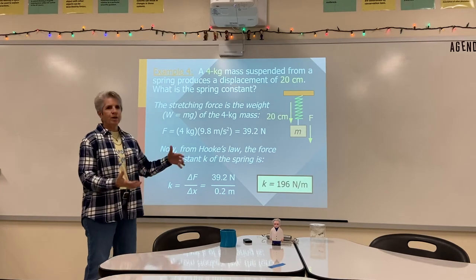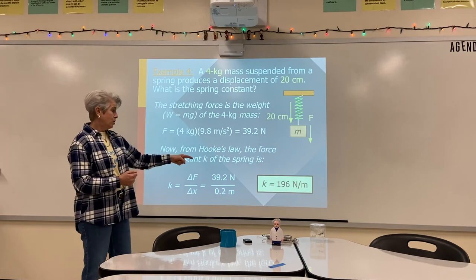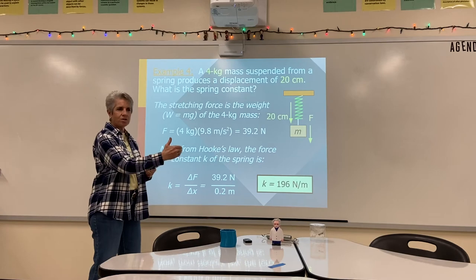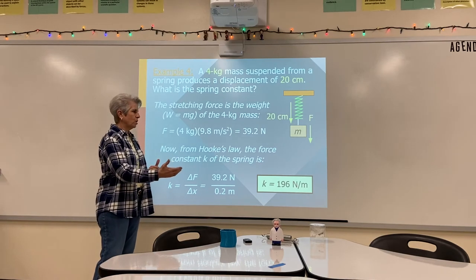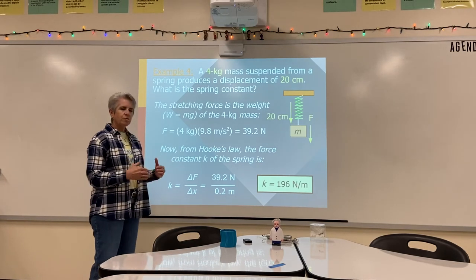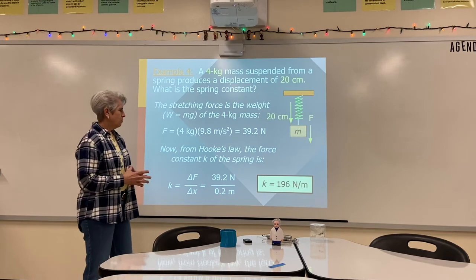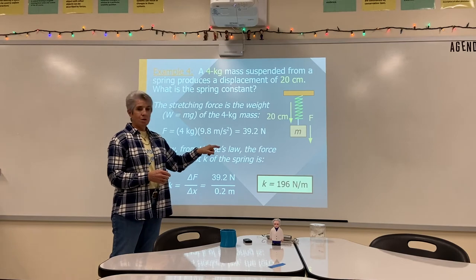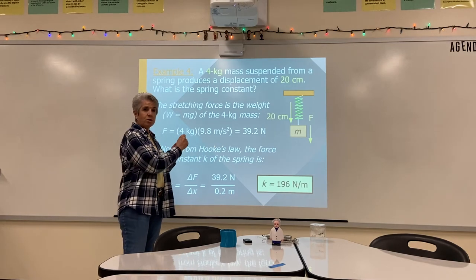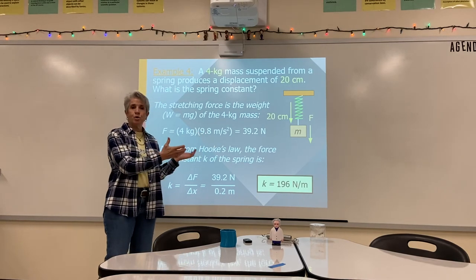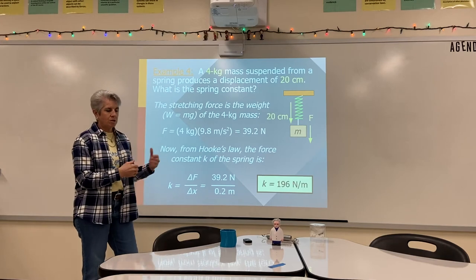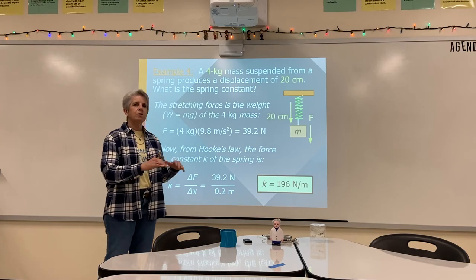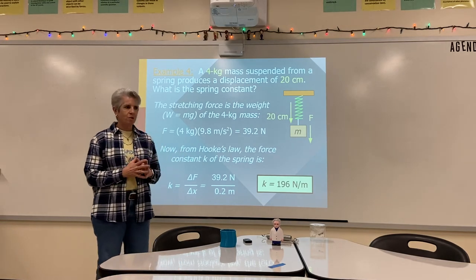Then if I wanted to find the work done in stretching this, I would use that K and this displacement: one half K times delta X squared. For units, Newtons per meter times meters squared gives Newtons times meters, which is still a joule. So whether you're stretching a spring or applying a constant force times distance, the unit for work is always the same.